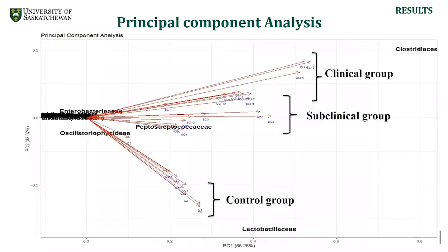With visualization of the data we performed principal component analysis, and we can see clear clustering in each category — control, subclinical, and clinical. Within each category, arrows lying close to each other represent flora similarity among samples.